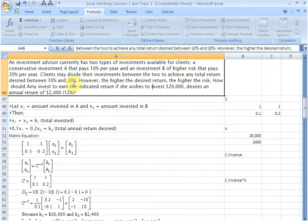However, the higher the desired return, the higher the risk. How should a certain client called Amy invest to earn the indicated return if she wishes to invest $20,000 and desires an annual return of $2,400, that is equivalent to a 12% return on her investment.